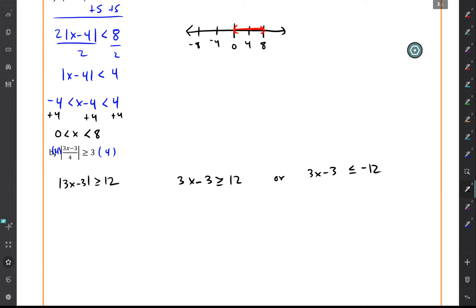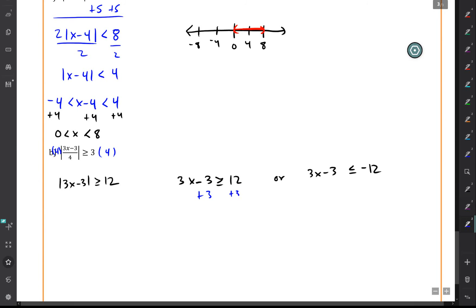So we're going to have two different solution sets on the number line. In the first case, if you add 3 to both sides, you get that 3x is greater than or equal to 15. So x must be greater than or equal to 5.